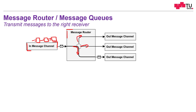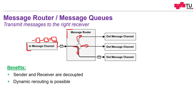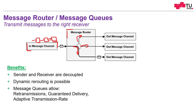The correct output channel can be decided at runtime. The benefits are that sender and receiver are decoupled — we think in message queues, not in senders and receivers. The message router doesn't care how messages got into the channel or how the output channels are read. Dynamic rerouting is possible: we can decide at runtime to send a message to another channel, multiple channels, or no channel at all.